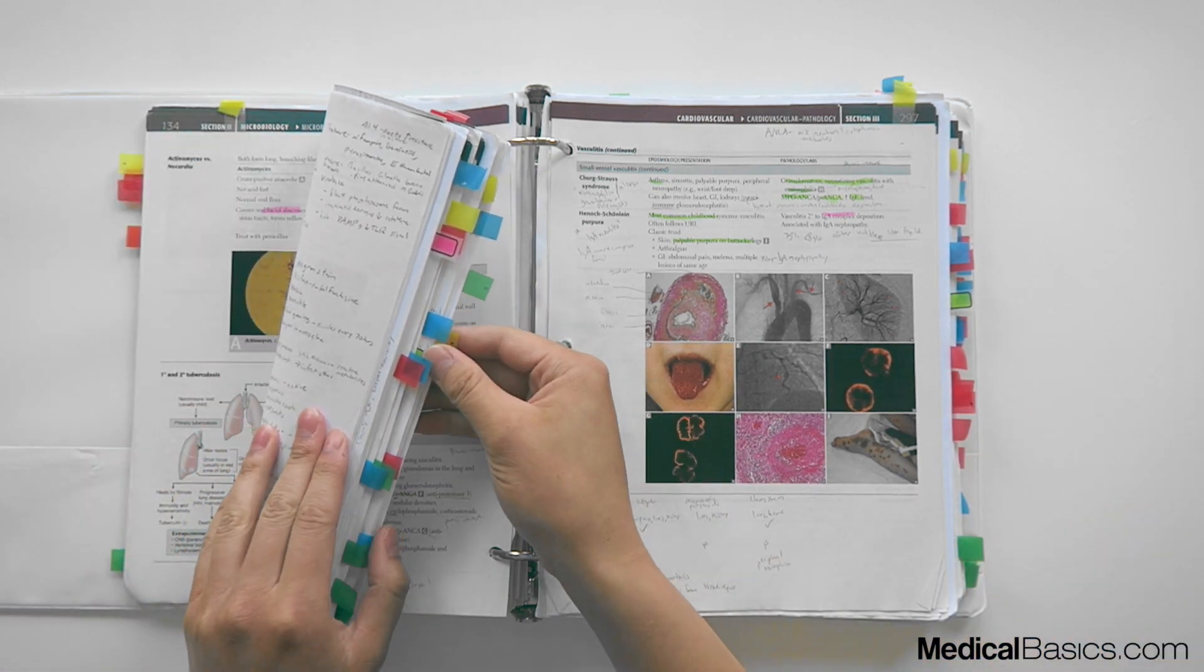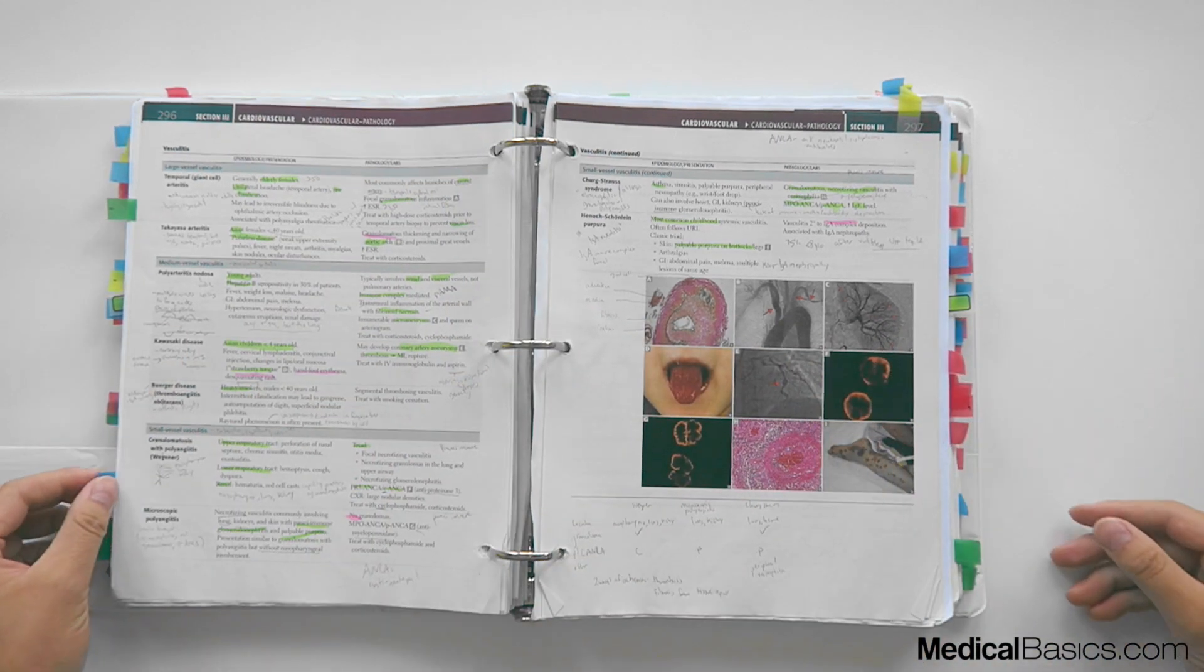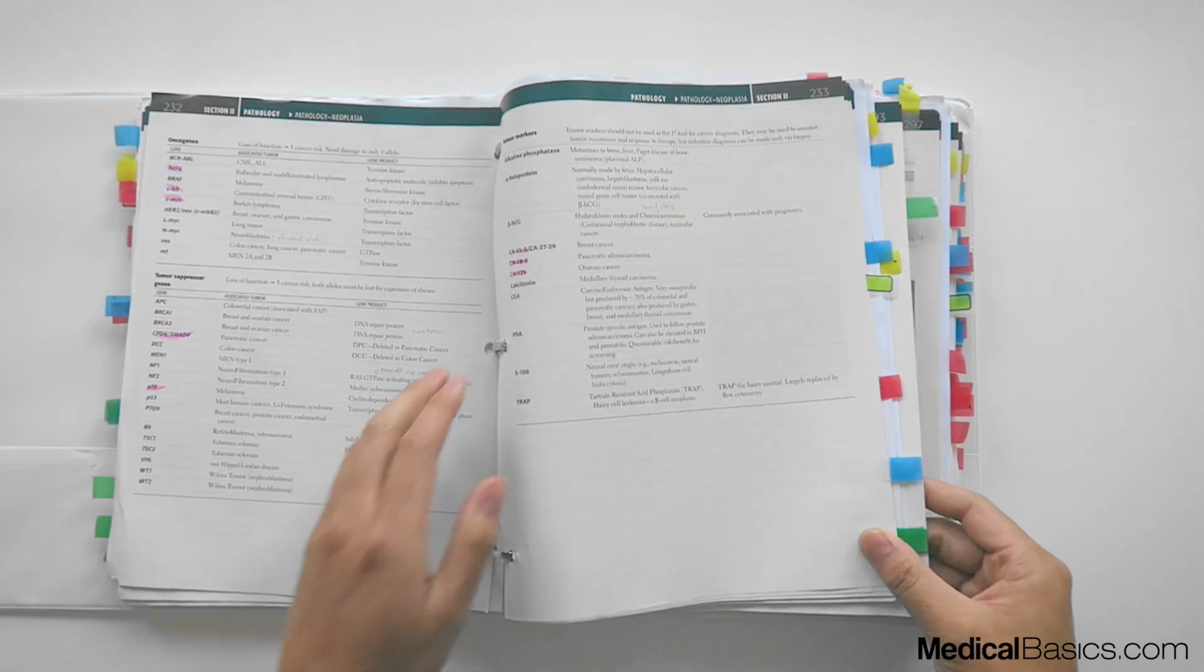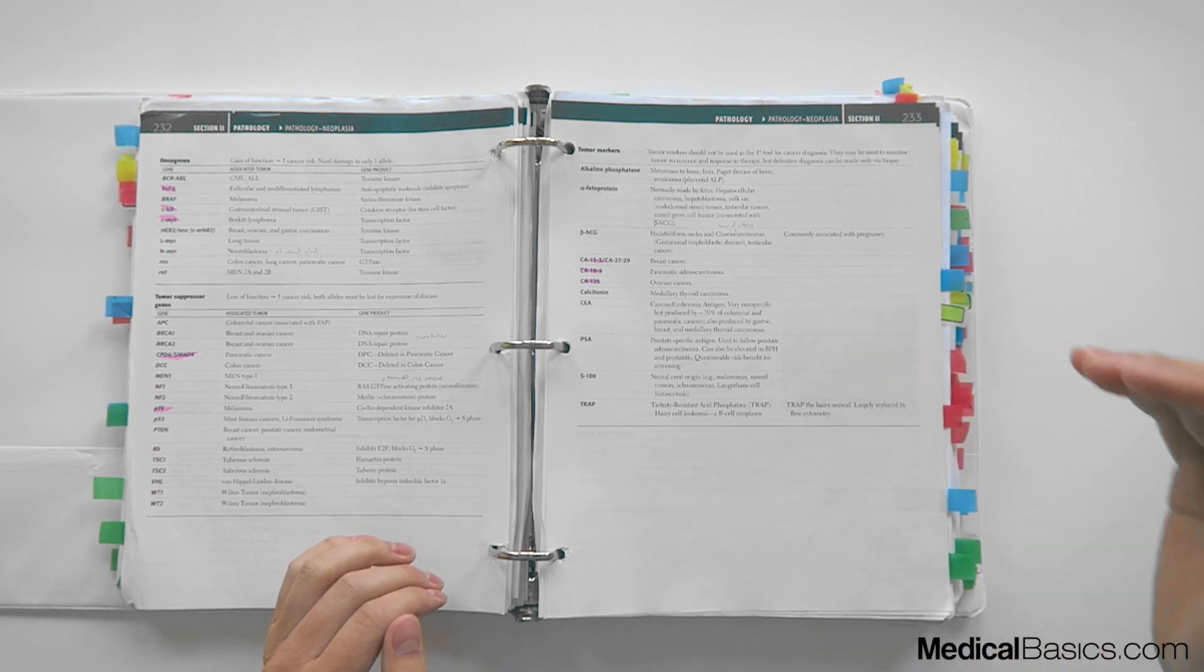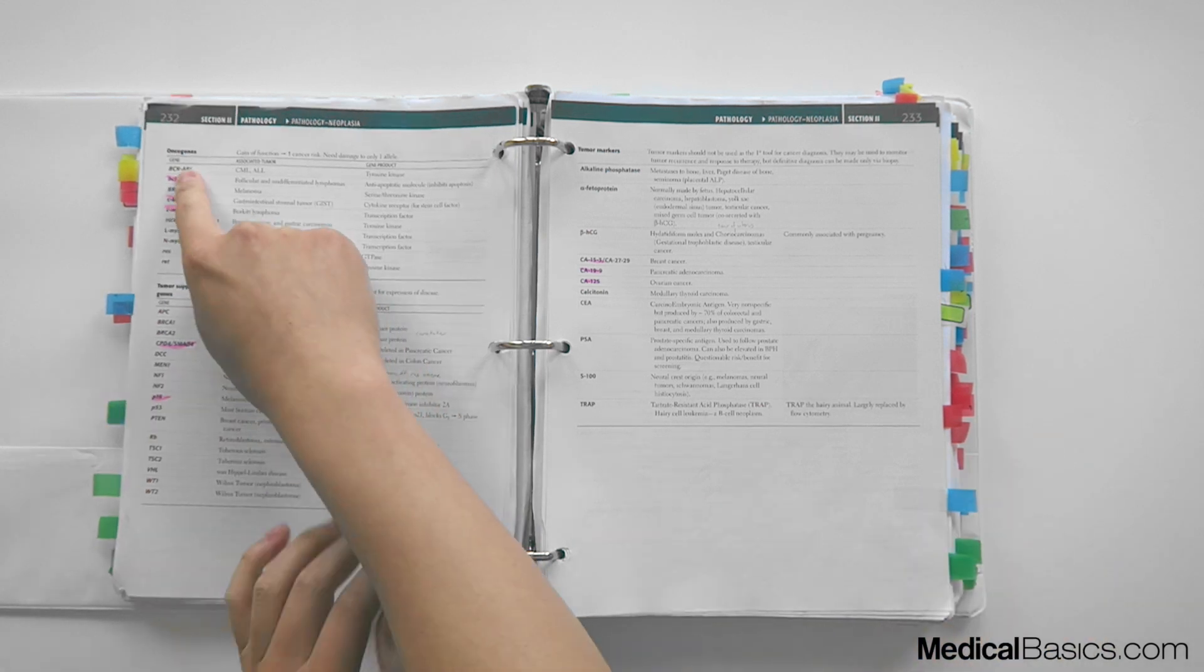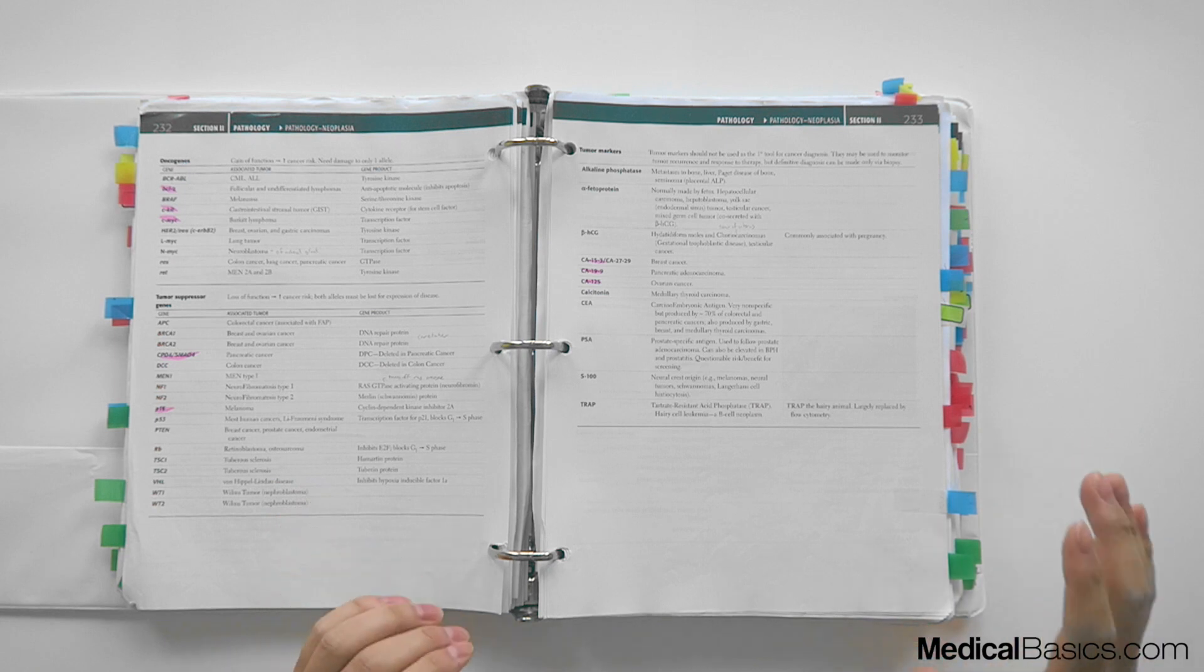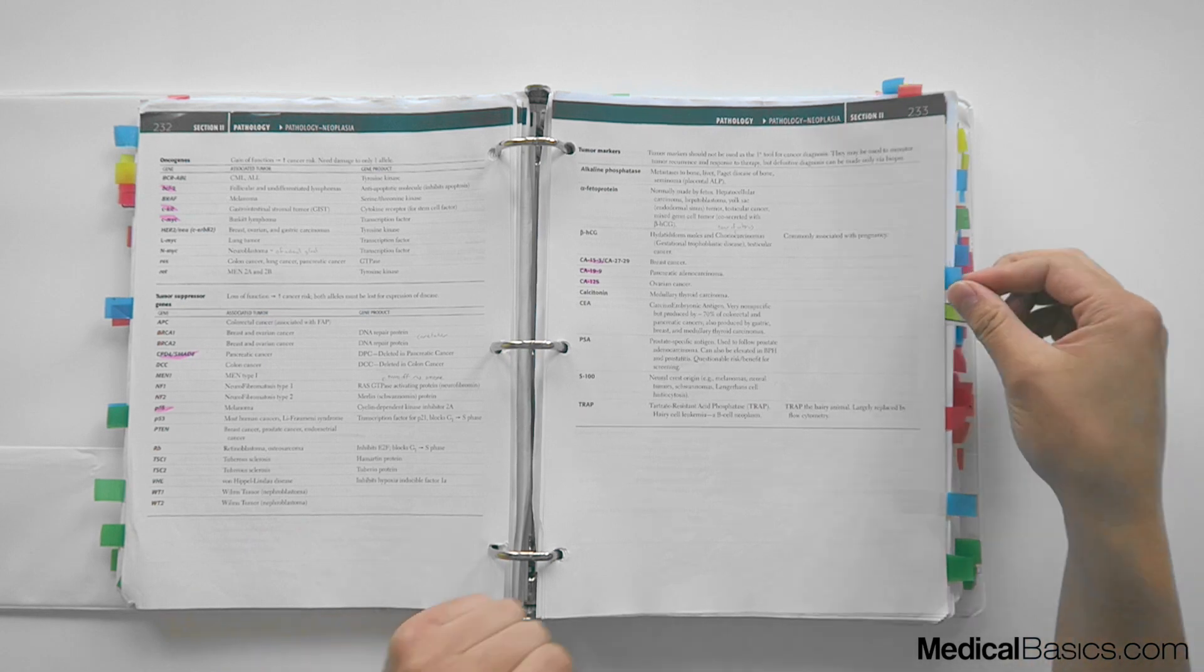I started off with the greens and then eventually I would go to the blues. So this is an example of something that was blue—something that at one point in time I knew was very important but I had a little bit more command but I was still messing everything up. Things like all these tumor suppressors and tumor markers. Things that I knew showed up fairly frequently but I was able to memorize them a little bit better and then they got upgraded.